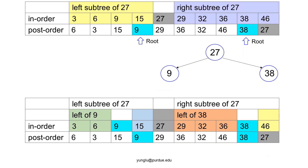Now, we know which nodes belong to the left subtree of 27. We can go to the post-order traversal and find which node appears last as the root of the subtree. Among the nodes in the left subtree of 27, node 9 is the last in the post-order traversal. Thus, it is the root of the left subtree. We can go to the in-order traversal and divide the left subtree of 27 into the left subtree of 9 and the right subtree of 9.